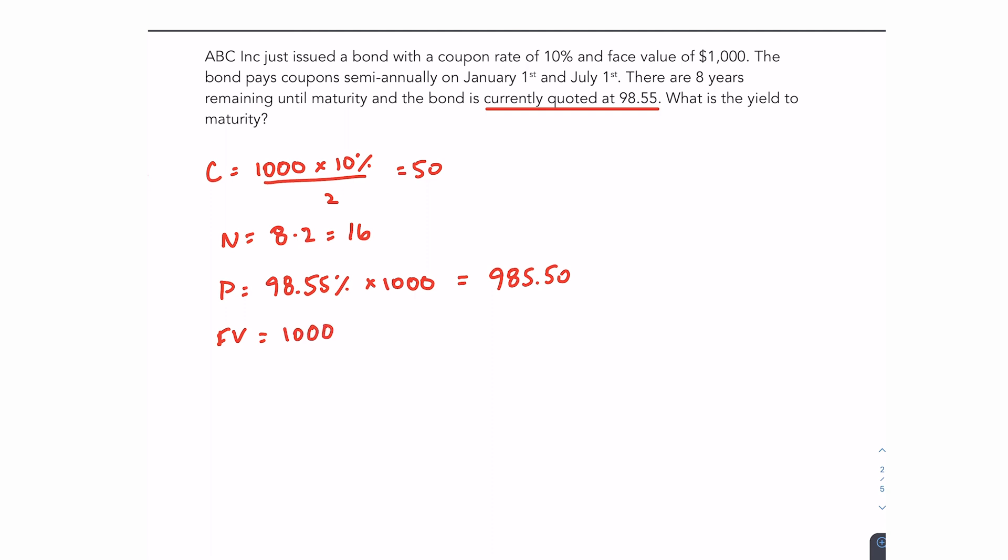So I have my PMT, which is the coupon. I have N. I have present value and I have future value. Now what's going to be important here is that you set your present value to negative when you punch it into the calculator so that the calculator understands the direction of the cash flows. The present value goes in one direction because the investor would be paying that. The coupon payment and the future value going the opposite direction because the investor would be receiving that.